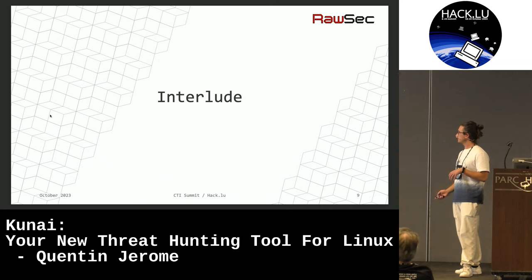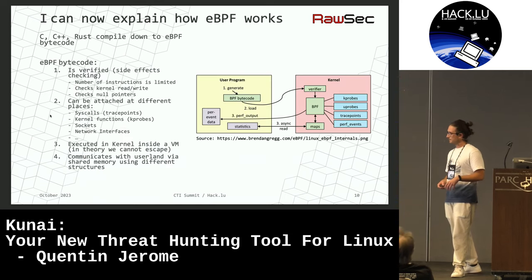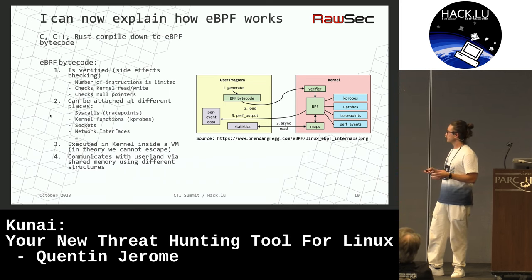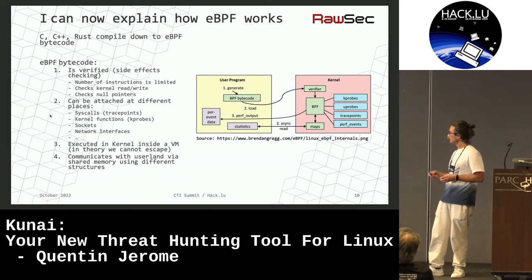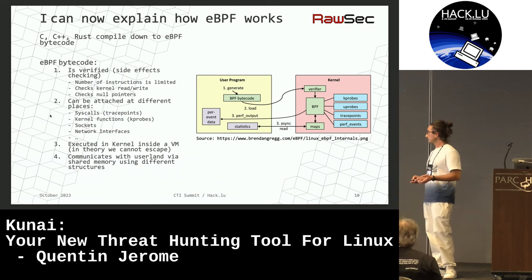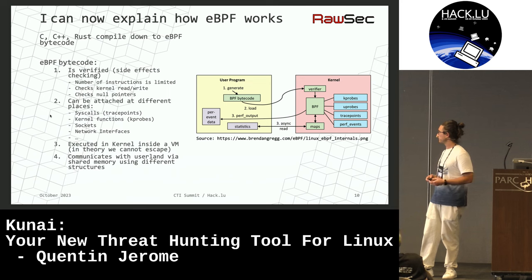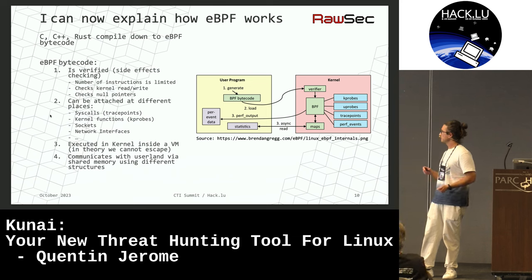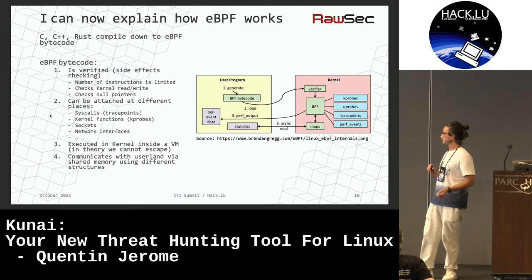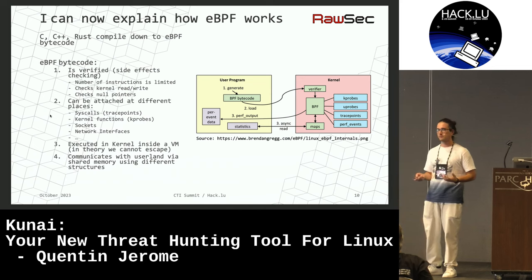A brief interlude to explain how eBPF works. First, you need a programming language that gets compiled down into eBPF bytecode. Then, this eBPF bytecode is in userland and needs to be loaded inside the kernel via syscall. It doesn't get loaded directly inside the kernel — it passes through a block called a verifier, that actually does a lot of safety checking. It checks the number of instructions of your program so that you don't end up with endless loops and don't cause performance issues. It checks for kernel read and write operations. It checks for null pointers — basically all the kinds of issues you can have when you write a kernel module.